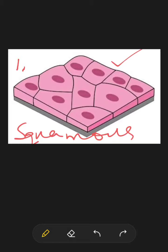Squamous epithelium cells line the inner walls of blood vessels, lungs, heart, and esophagus. They also form the epidermis of the skin, where they provide protection and prevent the entry of germs.